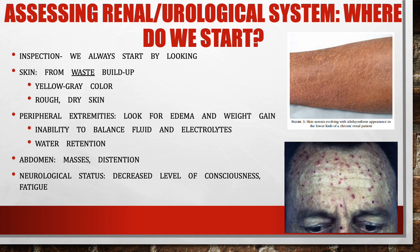After getting through the questions, we move on to assessment. We always start with inspection — we have to look first. For a kidney patient, we start with their skin. From waste buildup, they can have a yellow or gray color to their skin, as well as rough, dry skin from waste products coming out. When the kidneys can't eliminate waste, the body starts trying to get rid of it through the skin.